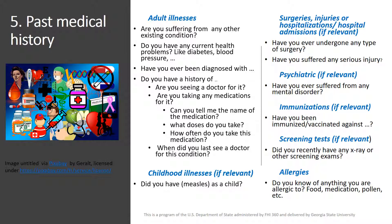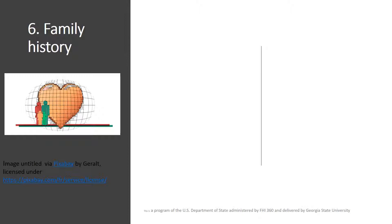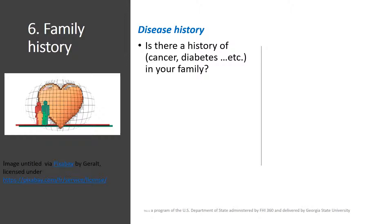Once you have your past medical history, you move to the family history. In this section, you will need information about the disease history in the family. You can ask: Is there a history of cancer, diabetes, or whatever condition is relevant to the present situation?